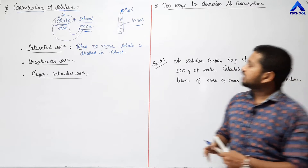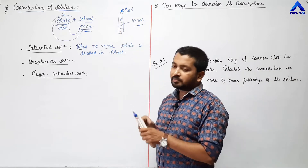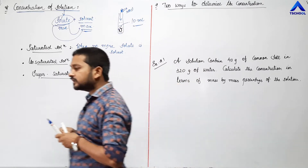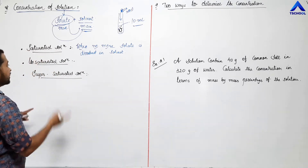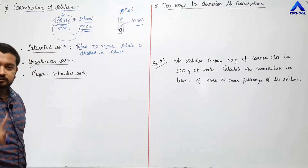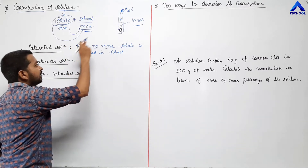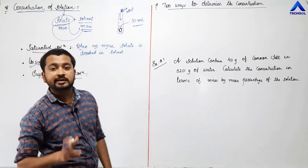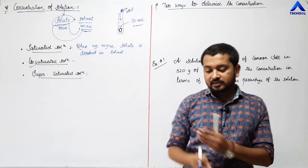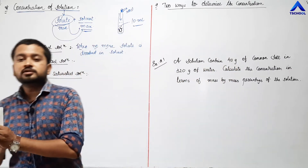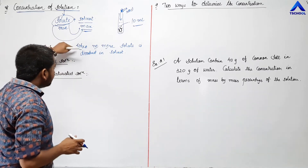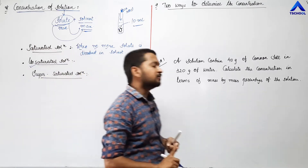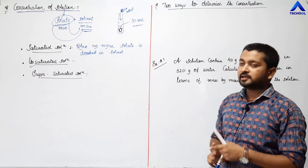Now let us talk about the unsaturated solution. The third spoon of NaCl I added — its particles will be visible in the test tube. So whenever particles of a solute are seen by the naked eyes in a solution, that type of solution is known as an unsaturated solution. When solute particles are visible to our naked eyes, that type of solution is known as an unsaturated solution.